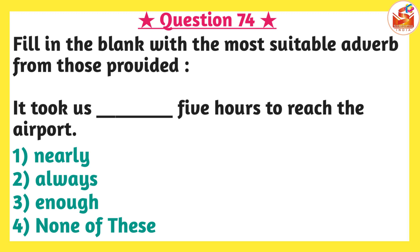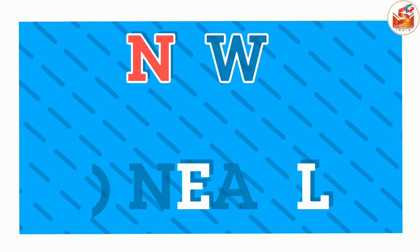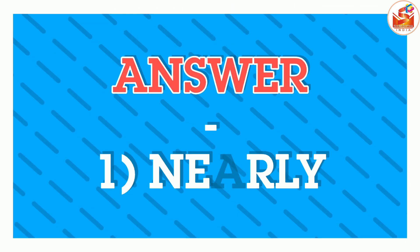Next question: fill in the blank with the most suitable adverb. 'It took us blank space five hours to reach the airport.' Options are: option one, nearly; option two, always; option three, enough; option four, none of these. The sentence describes a past event of reaching the airport. 'Always five hours' doesn't make sense. 'Enough five hours' is also unsuitable. 'Nearly' means approximately, which fits perfectly. The correct answer is option one — nearly — meaning it took us nearly five hours to reach the airport.